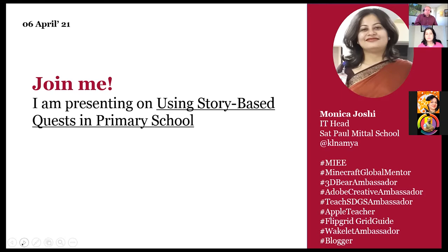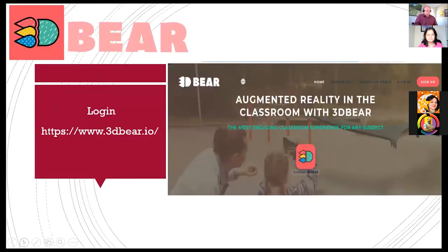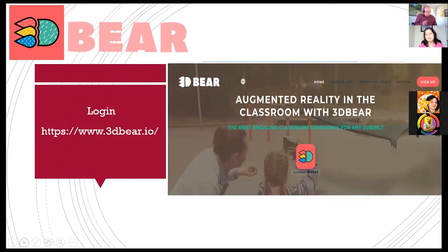As we progress further, we will be showcasing two lessons which you can use in your classrooms. For creating the story-based quest with the help of 3D Bear, you need to download the 3D Bear app from the App Store — available on iPhone and Android. If you want to use the lessons in your classrooms, you can go on 3dbear.io and create an account there, or find the resources and lessons there to use in your classrooms.